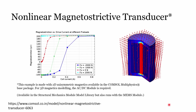Then we have non-linear magnetostrictive material — a classic example is the humming noise heard near transformers. Because of a very high magnetic field, the ferrite or magnetic material actually expands and contracts based on the operating frequency, causing a humming noise. Those humming noises can be modeled in COMSOL using magnetostrictive material models, and you can see how much the material changes for different coil currents.